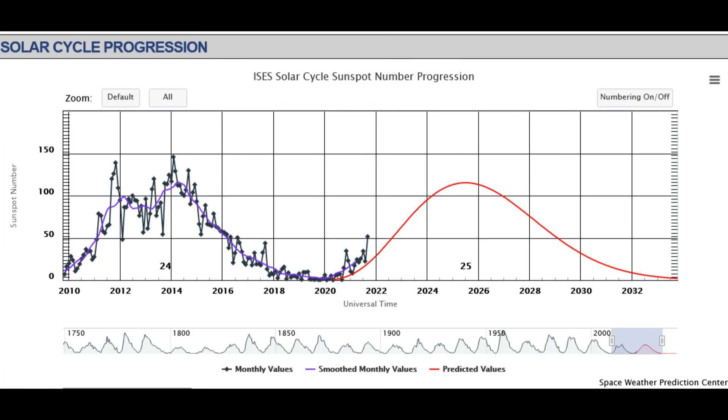Shown on the sunspot progression chart, we can see the Sun will be increasing in sunspot numbers through the coming months and years, which means an increase in solar flares.